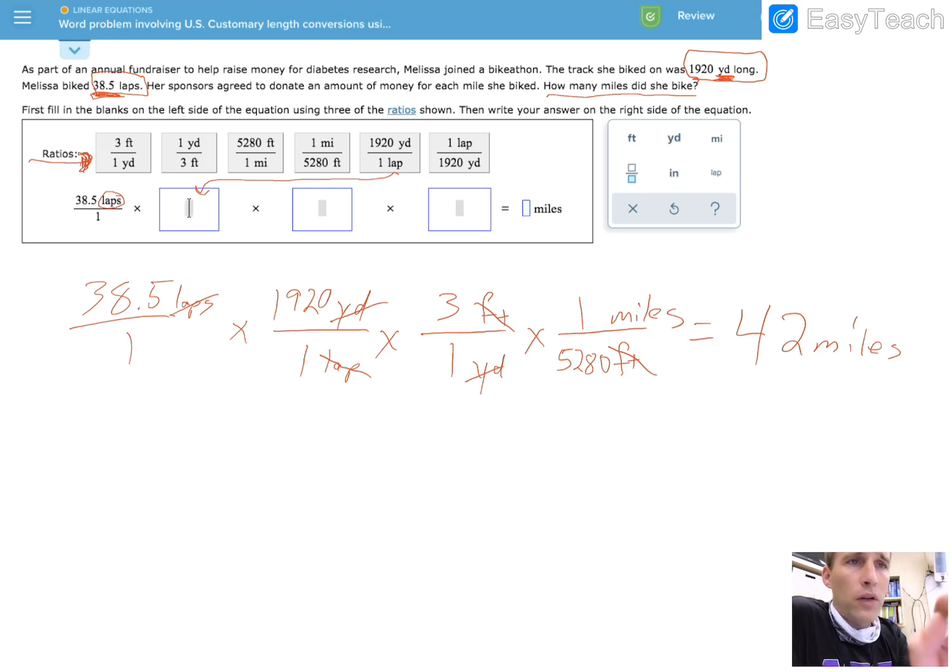So that's kind of a tricky one. But if we go back up here, then the three feet, that's going to go in there. And we're going to have one mile and the 5,280 feet goes into this box. And then we'll get our final answer, which is that one right there. Hope that helps.